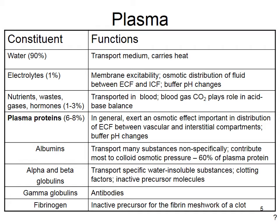One to three percent of your plasma is nutrients — things like glucose and amino acids. Waste products like bilirubin, which is a waste product of blood cell breakdown. Gases: there's a little bit of oxygen and CO2 dissolved in plasma, but most oxygen and CO2 are carried in other ways — we'll talk about this again when we discuss the respiratory system. You also have some hormones like insulin, glucagon, etc.